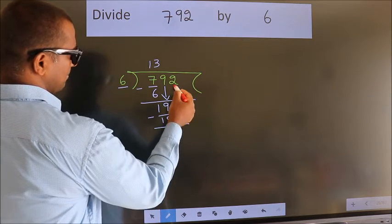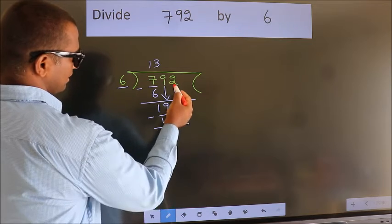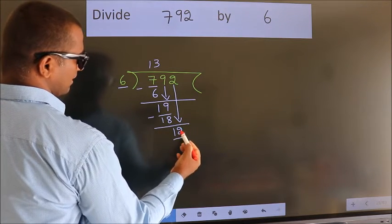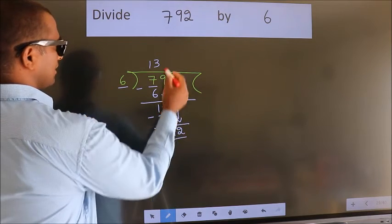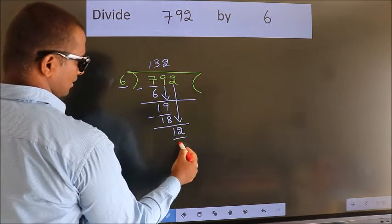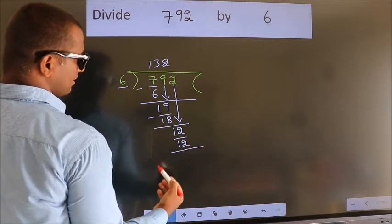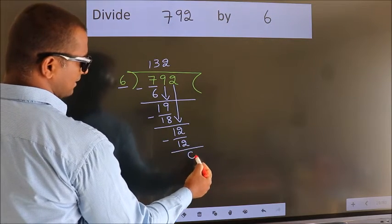After this, bring down the beside number. So 2 down. So 12. When do we get 12? In 6 table. 6 twos, 12. Now we subtract. We get 0.